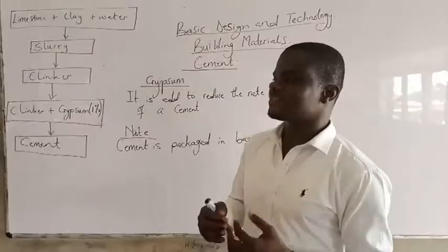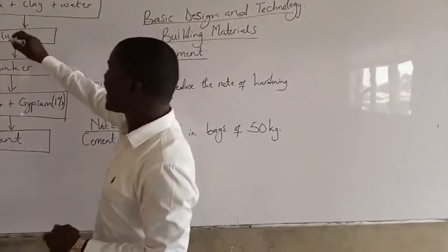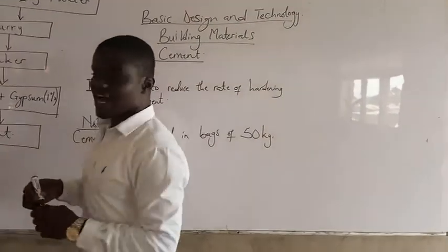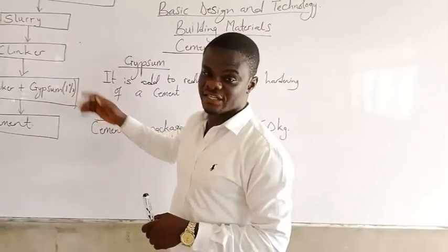Now when we talk about cement, the raw material for manufactured cement is limestone and clay. I'm going to use this chart to explain to you how cement is manufactured.